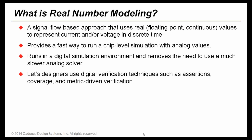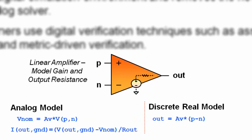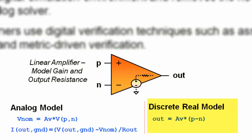Real number modeling lets designers use digital verification techniques such as assertions, coverage, and metric-driven verification. Here is an example of a simple linear amplifier model, where an analog model is represented with statements involving matrix entries plus those from all connected devices to solve for the values of all node voltages and branch currents.